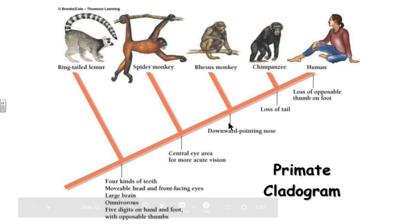Further along the cladogram we see a downward-pointing nose, then the first with the loss of tails. And of course humans have no tails either, but we have also lost our opposable thumb on the foot.